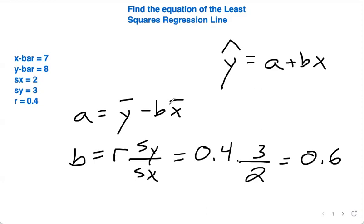And then from there, we can go back and find a. So now we have y-bar, which is going to be 8, minus b, which is 0.6, times x-bar, which is 7. So 8 minus 0.6 times 7 will give you 3.8.